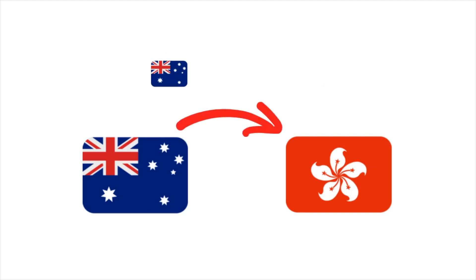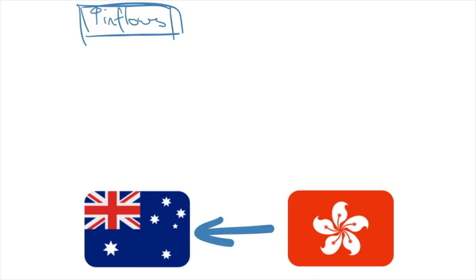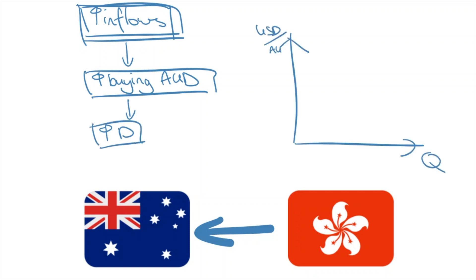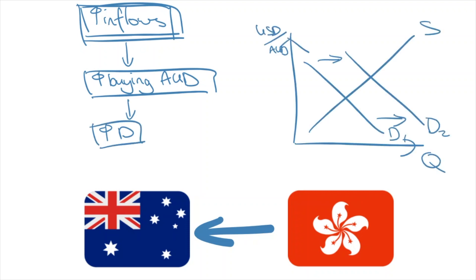In the same way, when foreigners receive from us, they'll want our Australian dollars converted into their local currency. Building off this, we can explain why the Australian dollar appreciates or depreciates. Whenever we receive money from overseas, foreigners must buy Australian dollars before they send it to us. Upon this purchase, they have created demand for the Aussie dollar. When you increase the demand for something, the price goes up — you get an appreciation.